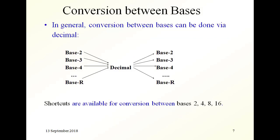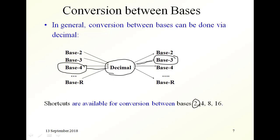Now, converting between bases — if you want to convert, for example, from base 4 to base 3, the easiest way is to go through the decimal number. You convert first to decimal, and then you convert to base 3. There are some shortcuts for certain systems: the binary system, base 4, base 8, and base 16.